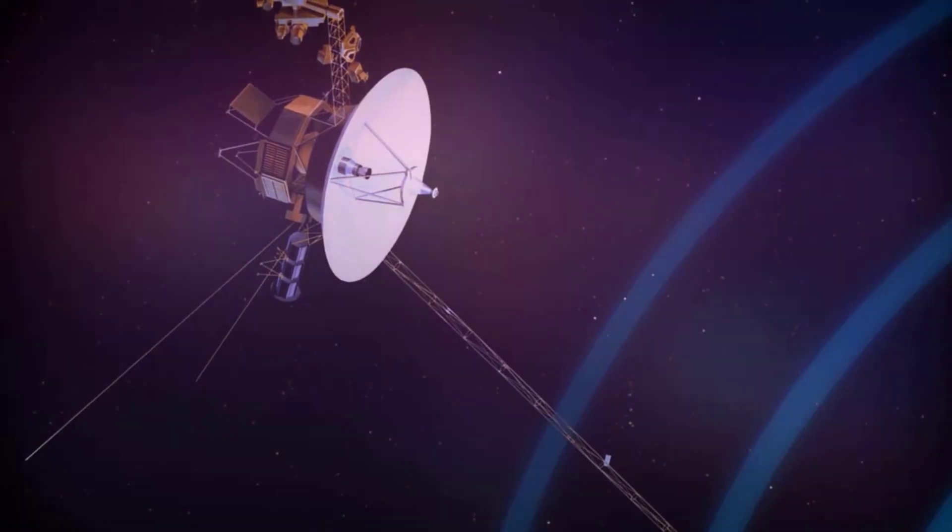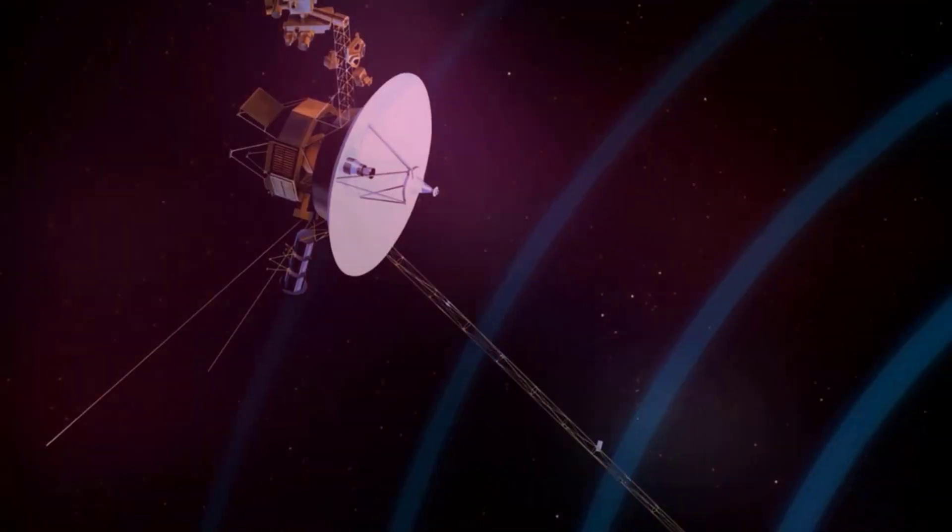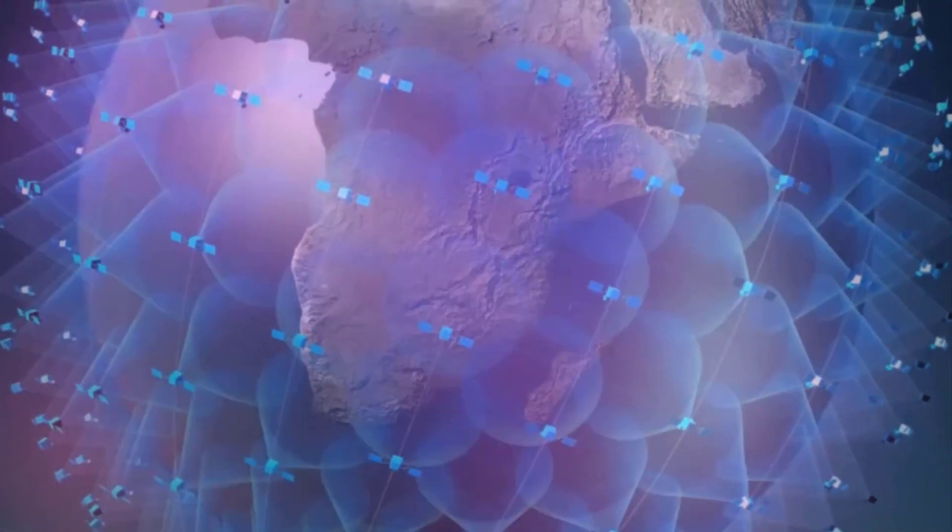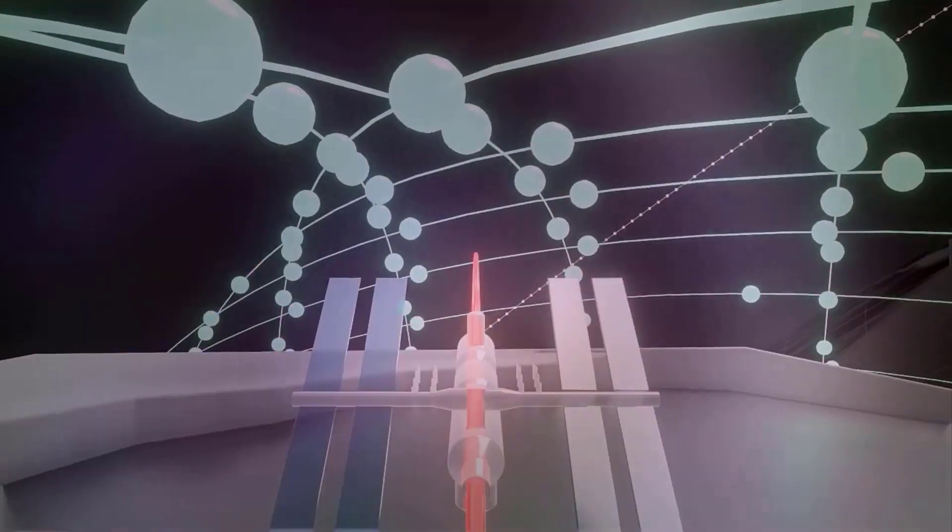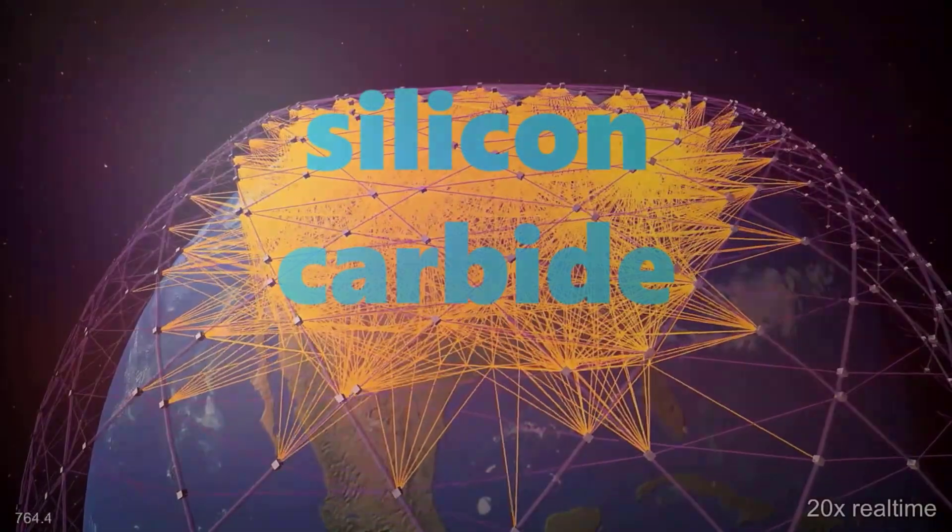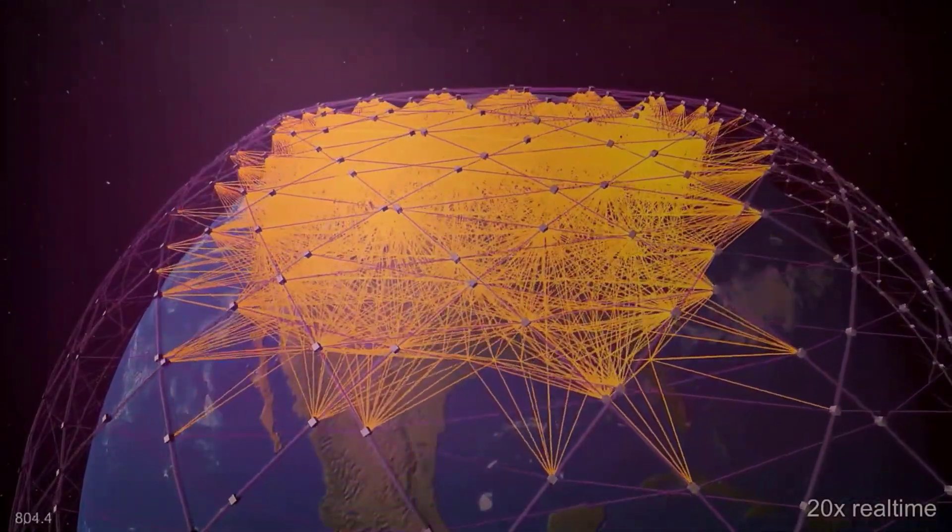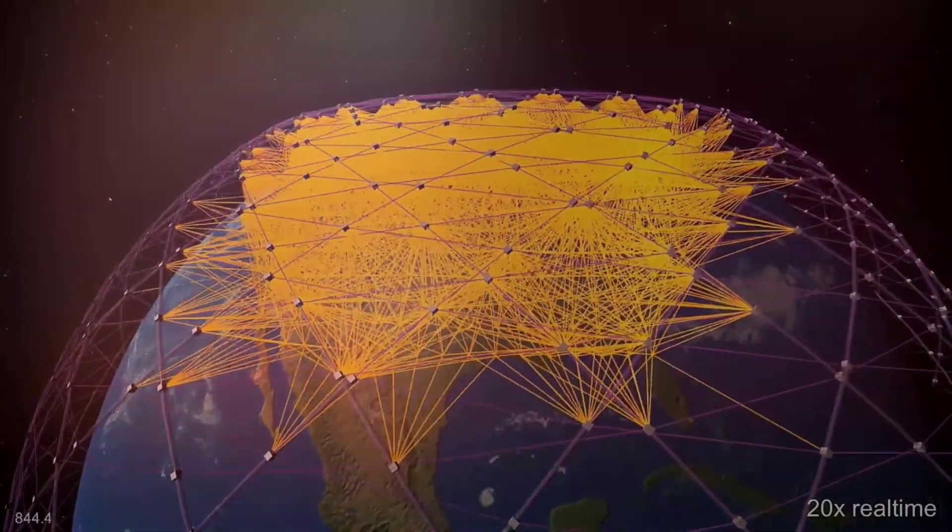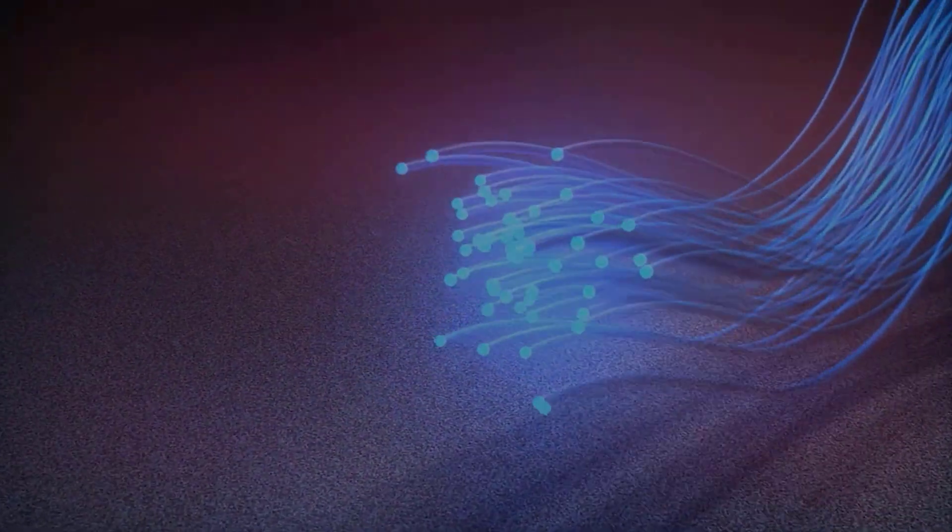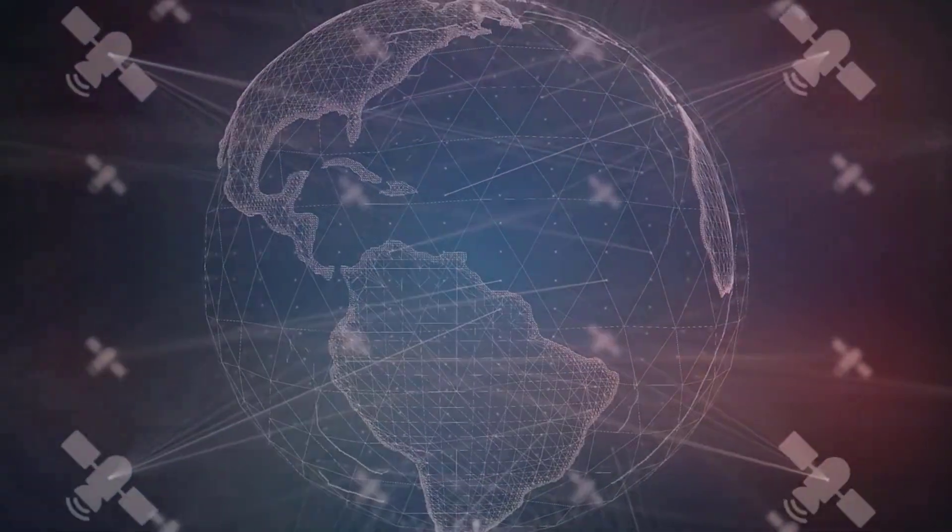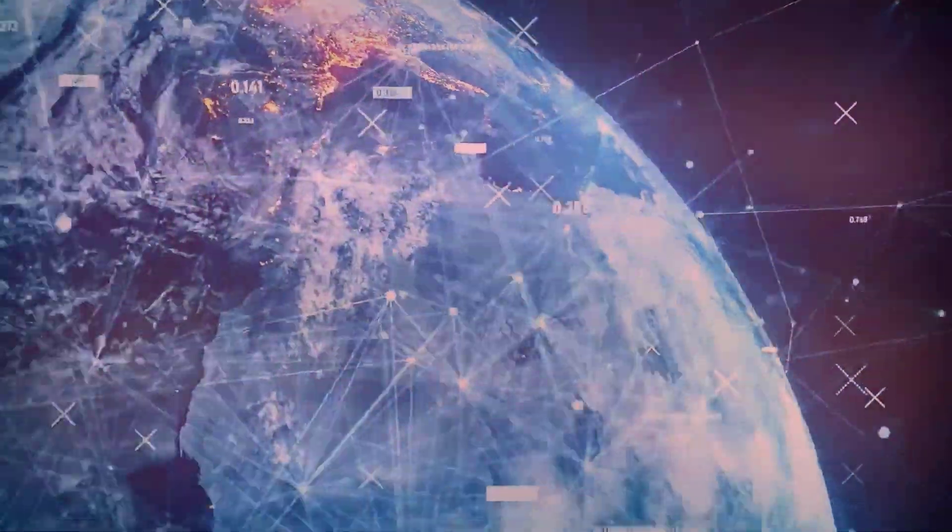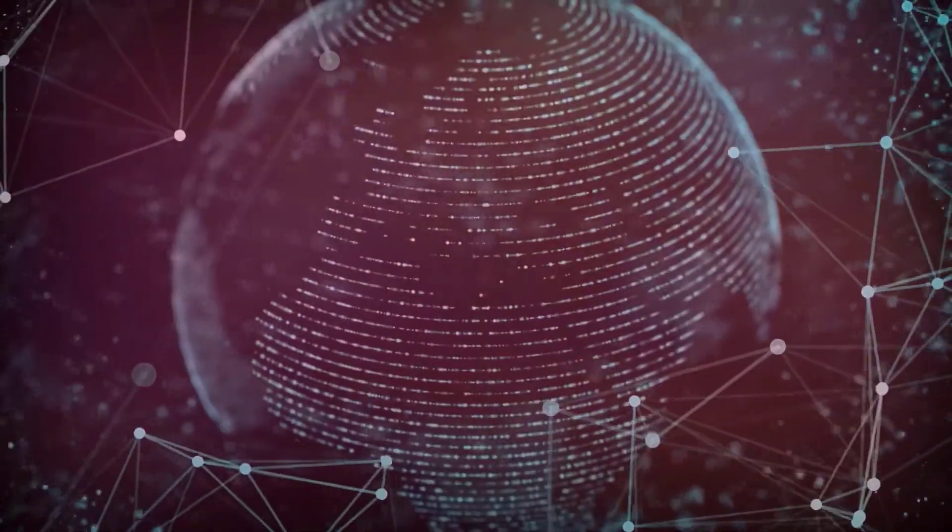Which brings us to our communications abilities, the primary function of the satellite. SpaceX has been tight-lipped on many of the details of the satellite. Still, thanks to the FCC filing, we know that the satellite will contain five 1.5kg silicon carbide components, which indicates that each satellite will provide five individual lasers. These lasers, like our fiber optic cables here on Earth, will use light pulses to transmit information between satellites.